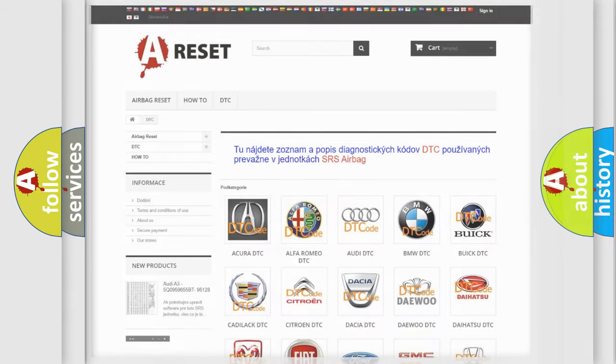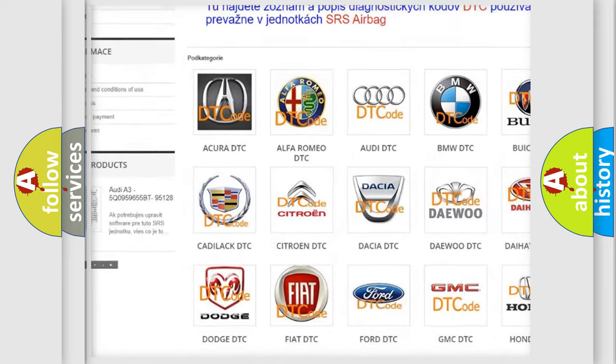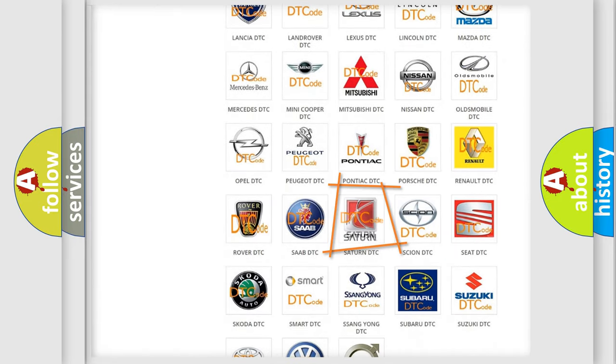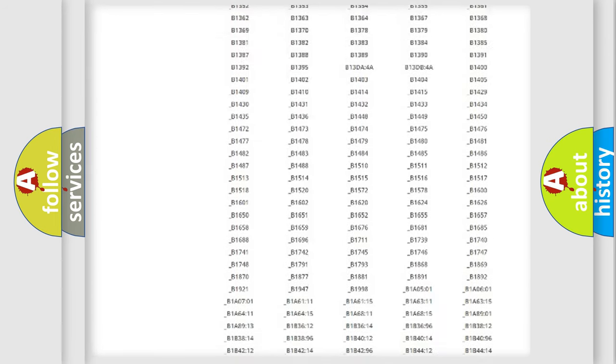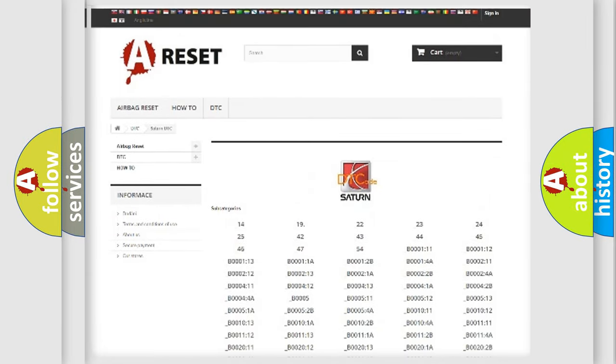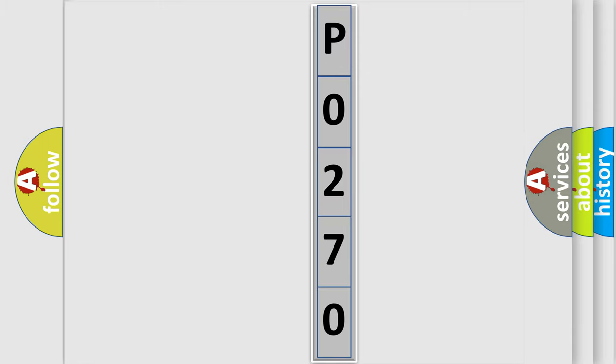Our website airbagreset.sk produces useful videos for you. You do not have to go through the OBD2 protocol anymore to know how to troubleshoot any car breakdown. You will find all the diagnostic codes that can be diagnosed in various vehicles, also many other useful things. The following demonstration will help you look into the world of software for car control units.